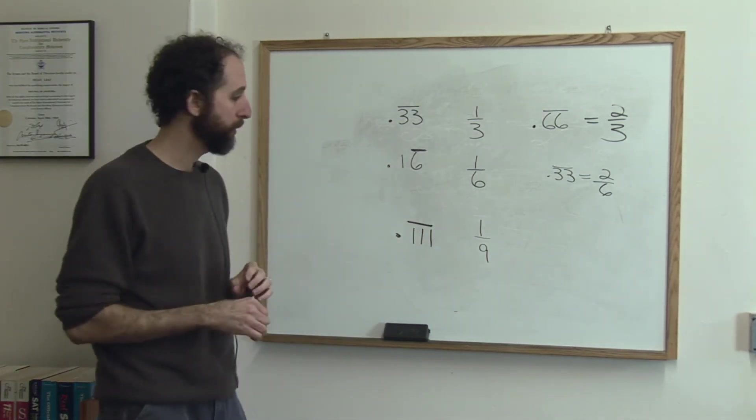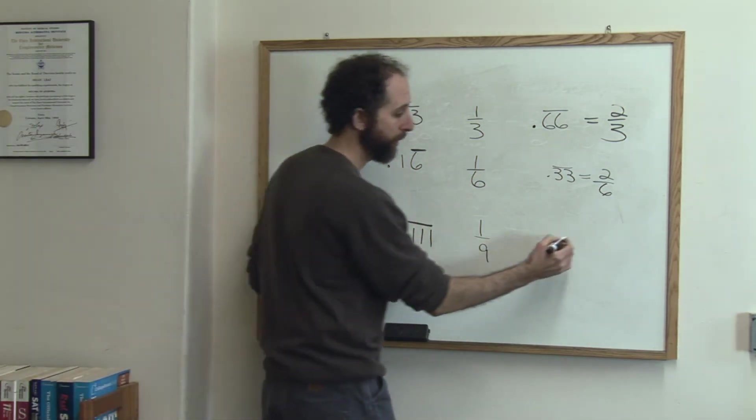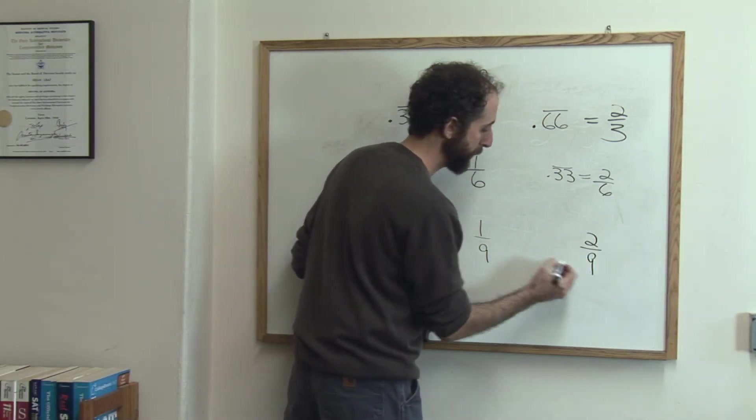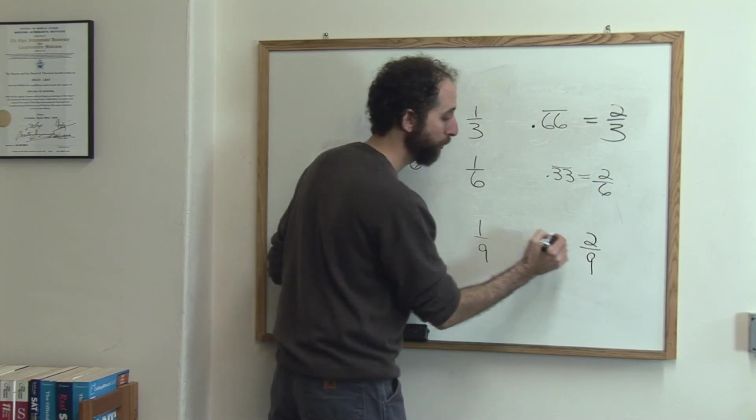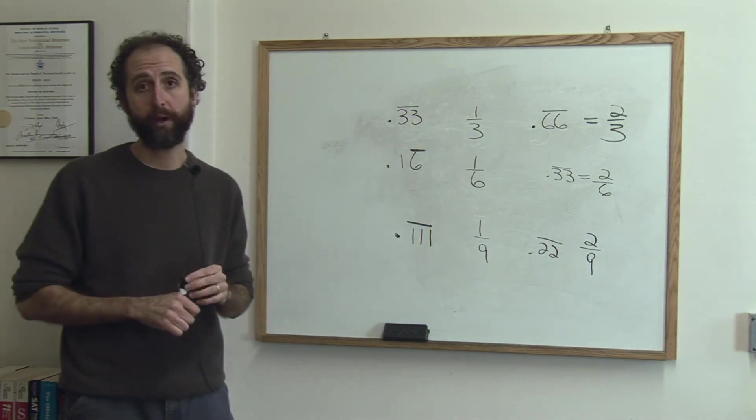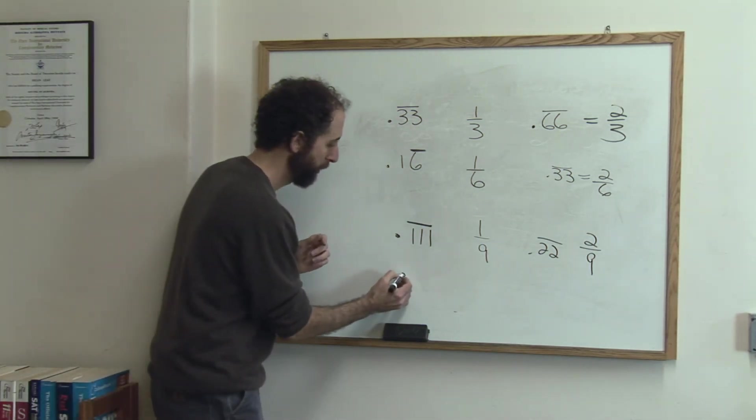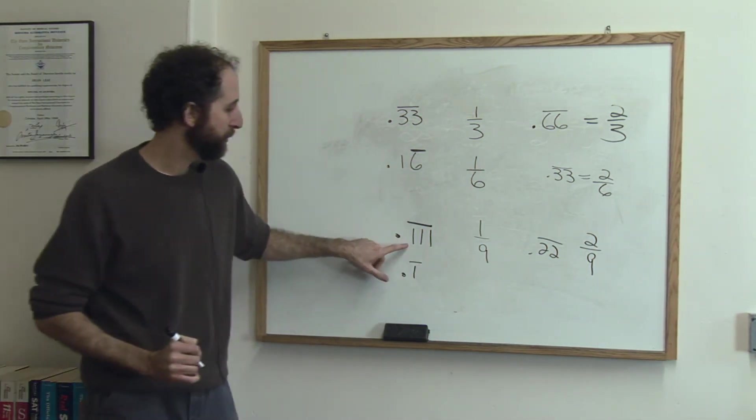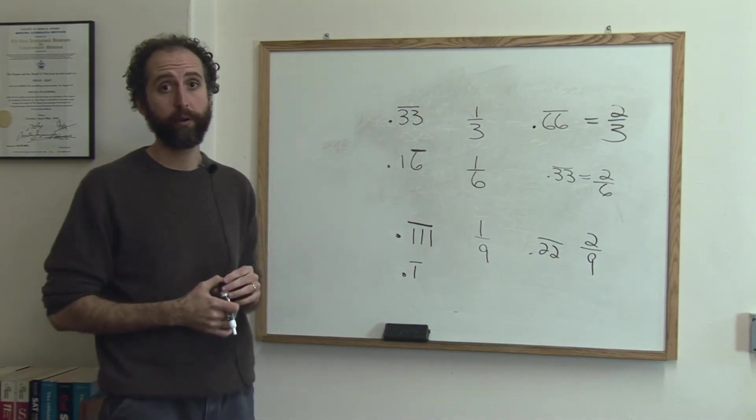And any time you take another version of that, like two-ninths, it's actually just .22 repeating. And notice I wrote three ones and put the bar, I wrote two twos and put the bar, it doesn't actually matter. In fact, really all you need is that. A lot of times people do this just because it gives you more of a sense of the number.